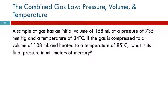So let's do an example with the combined gas law. A sample of gas has an initial volume of 158 milliliters at a pressure of 735 millimeters of mercury and a temperature of 34 degrees Celsius. If the gas is compressed to a volume of 108 milliliters and heated to a temperature of 85 degrees Celsius, what is its final pressure in millimeters of mercury? So we'll put all this information into a table that will sort it out and label it for us, and then we'll find the appropriate equation, and it's really not that bad.